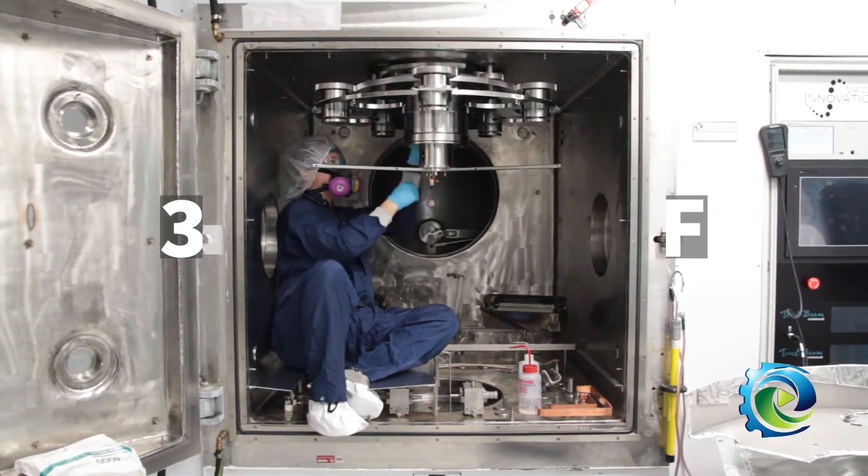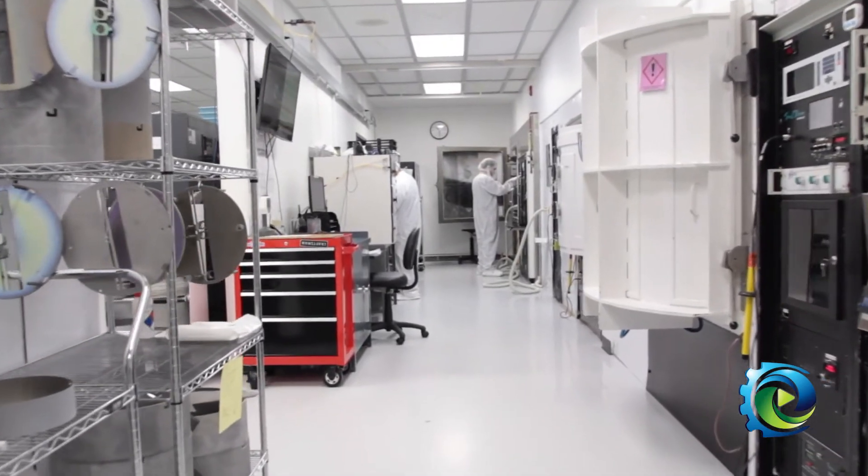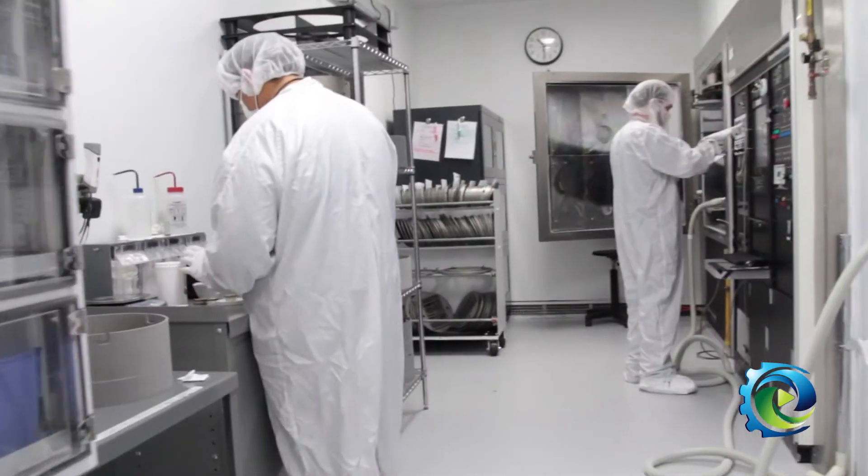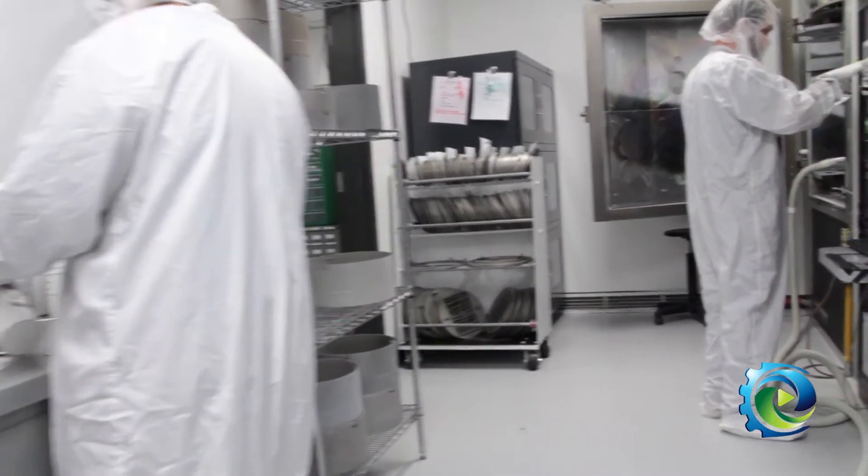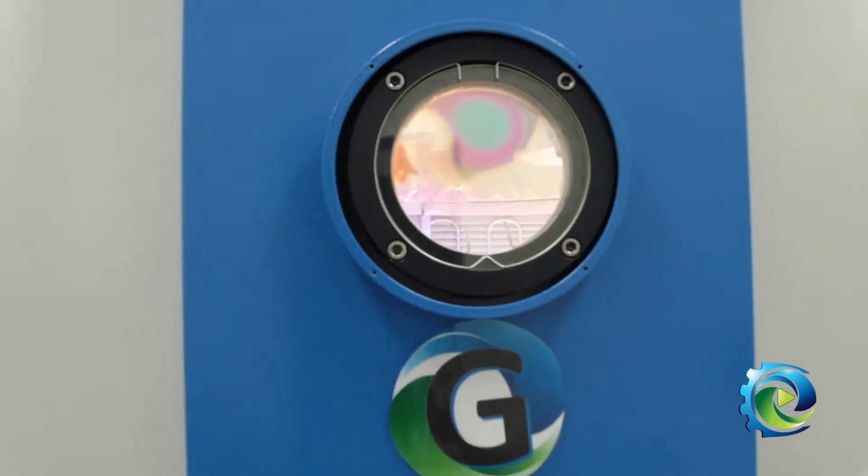Then we deposit materials using an electron gun. It arcs using magnets onto the material and evaporates it. That material comes up as a plume and coats the optics above. We repeat that process layer by layer until we complete our coating, then we cool down the chamber.